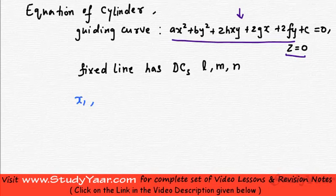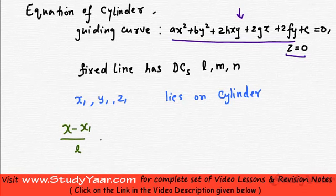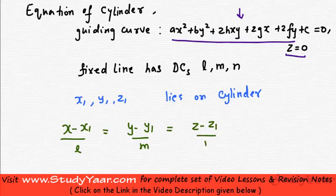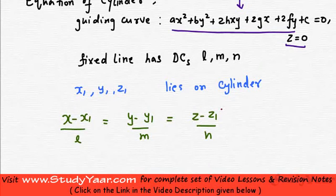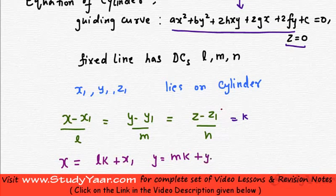Suppose (x₁, y₁, z₁) is an arbitrary point lying on the cylinder. Since the lines are parallel to the fixed line with direction cosines l, m, n, the equation of the line through this point is: (x − x₁)/l = (y − y₁)/m = (z − z₁)/n = k. A general point on such a line is: x = lk + x₁, y = mk + y₁, z = nk + z₁.